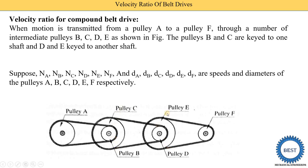Pulleys B, C, D, and E are called intermediate pulleys. Pulleys B and C are keyed on one shaft, and D and E are installed on the same shaft. We consider NA, NB, NC, ND, NE, NF as the speeds of pulleys A, B, C, D, E, and F respectively. DA, DB, DC, DD, DE, DF are the diameters of pulleys A, B, C, D, E, and F respectively.